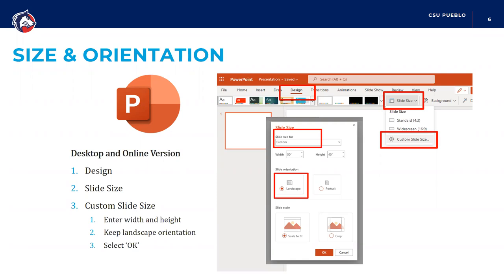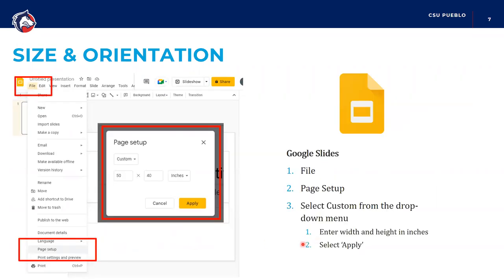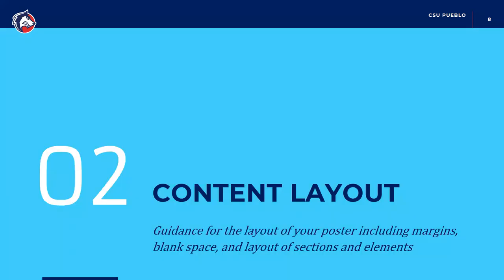In Google Slides, it works a little differently. You'd go under File when you're in your presentation, and then at the bottom there's Page Setup, which opens a box. From the drop-down menu, hit Custom, then enter 50 by 40 and hit Apply. It'll resize your poster to the correct size.